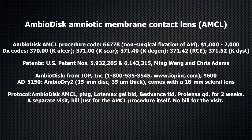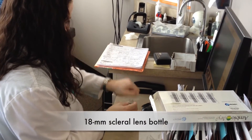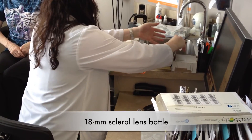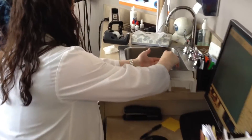The diagnostic codes that crosswalk with AMCL include corneal ulcer, corneal epitheliopathy, recurrent corneal erosion, and corneal scar and dystrophy.